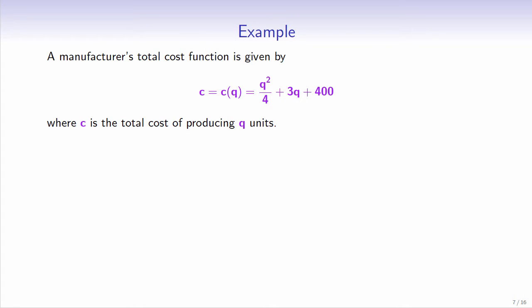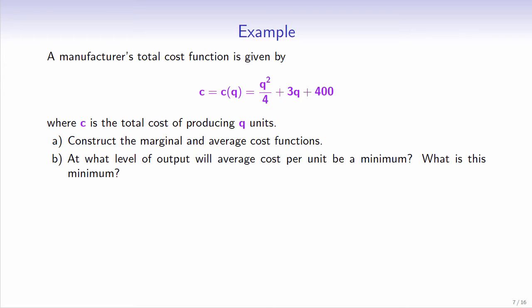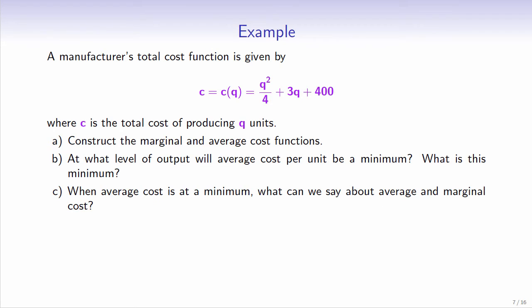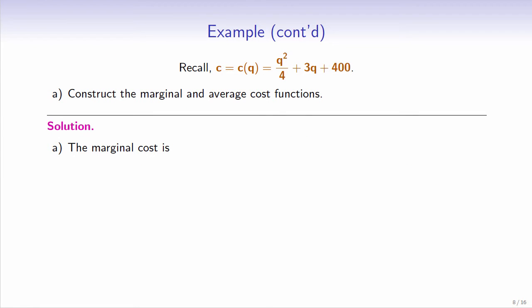Let's look at an example. A manufacturer's total cost function is given by c equals q squared over 4 plus 3q plus 400, where c is the total cost of producing q units. Construct the marginal and average cost functions. For Part A, recall that marginal cost is just the first derivative of cost with respect to q. So marginal cost is 2q over 4 plus 3, which equals q over 2 plus 3.